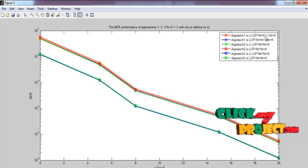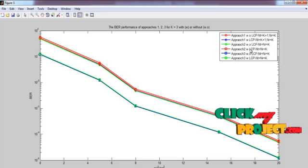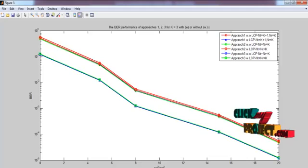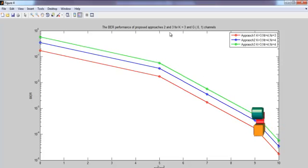the number of transmit beamforming is K plus one and the number of receiving beamforming is K. In this method, both transmit and beamforming are the same. And this is the BER response for approaches two,